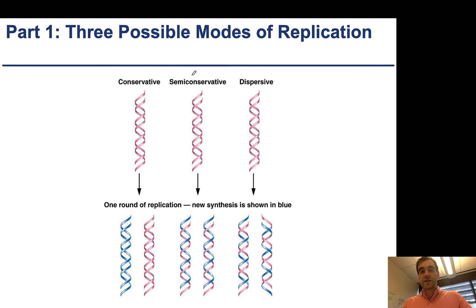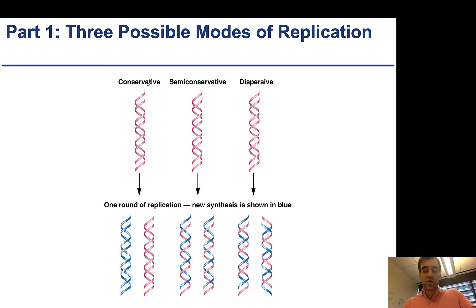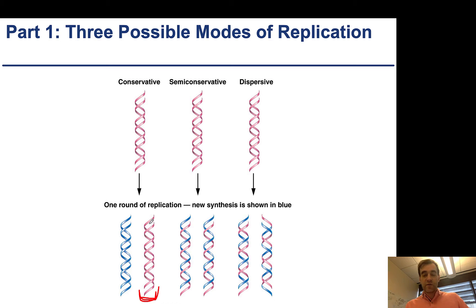Conservative is shown on the left, semi-conservative in the middle, and dispersive on the right. Initially you have a single double-stranded piece of DNA. We're going to designate the old and the new strands by color — the old strands are red, and the new strands generated by DNA replication are in blue. In conservative replication, the old strands stay together. Somehow these two strands are able to replicate, but after replication occurs, the old strands come together and keep a double-stranded piece of DNA, whereas both of the new strands come together into a piece of double-stranded DNA from the new round of replication.